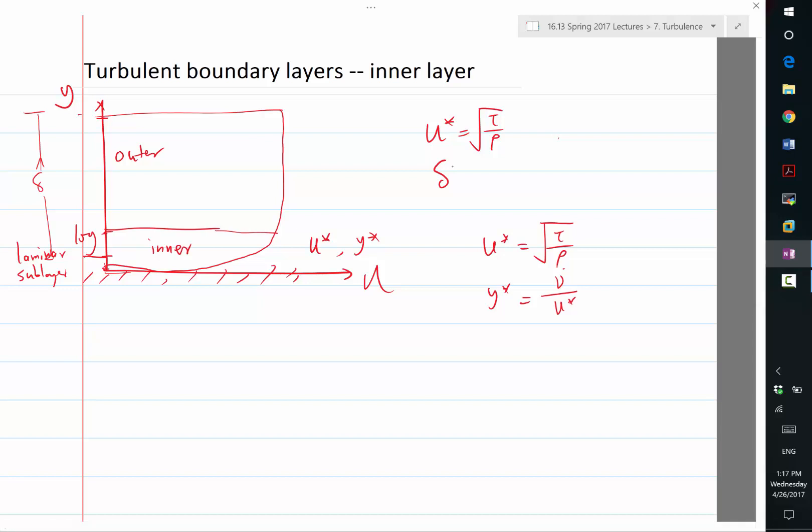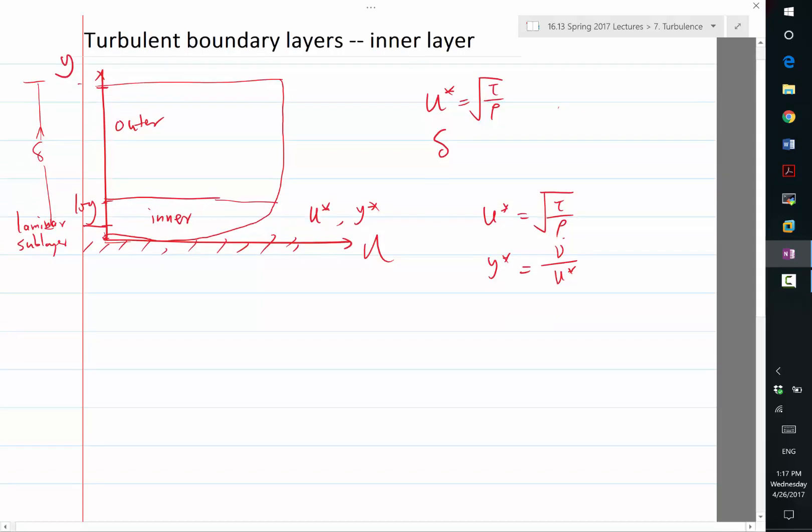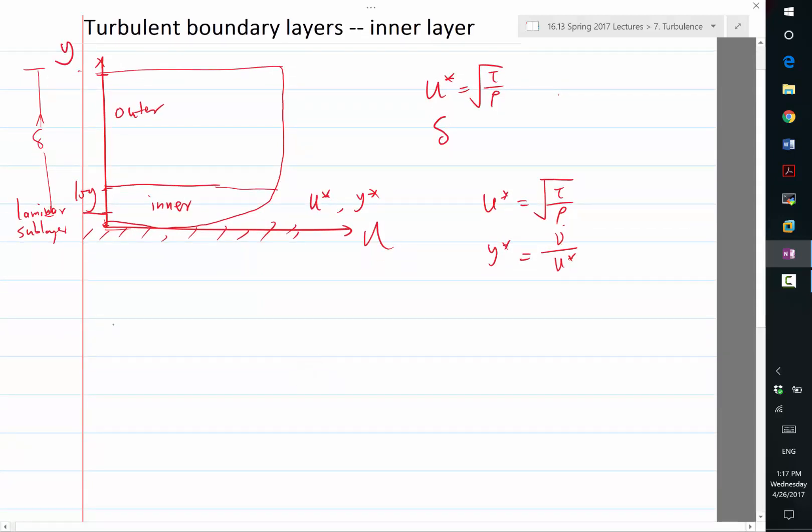The inner layer has a pretty universal profile, and the Spalding profile is usually used to characterize the inner layer. Remember, a significant portion of the inner layer is linear. Y plus is the ratio of y and y star.